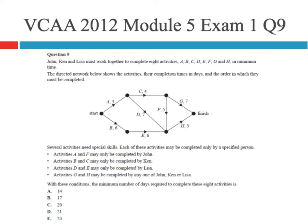So having a look at it, John, Ken and Lisa must work together to complete the eight activities in a minimum time. The directed network below shows the activities, their completion time in days and the order in which they must be completed. So we've got a graph there and then we've got a number of restrictions. So A and F can only be completed by John, B and C only completed by Ken, D and E only completed by Lisa and then the last two activities G and H can be completed by anyone.